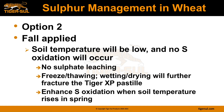Option two is fall application. Soil temperatures will be low — below the optimum temperature for bacteria to be active — so therefore there's no sulfur oxidation taking place, which results in no sulfate leaching potential. The freezing, thawing, wetting, and drying will further fracture those sulfur pastilles into much smaller pieces, which will enhance the sulfur oxidation process when soil temperature rises in the spring.